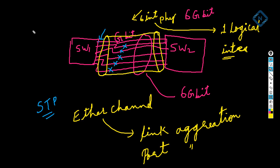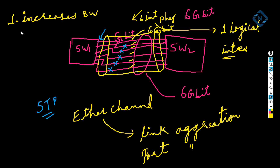What advantages do we get from EtherChannel? First, we can increase the bandwidth. We have 1 GB for one link; with six links it will be 6 GB speed. Second advantage is redundancy. If you are working in a production network and one cable goes down, without EtherChannel the other ports are disabled by spanning tree protocol and it takes 30 to 50 seconds, or less than 10 seconds with RSTP, for a port to come back up.